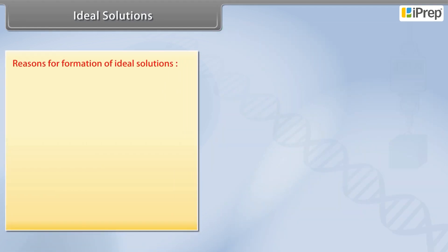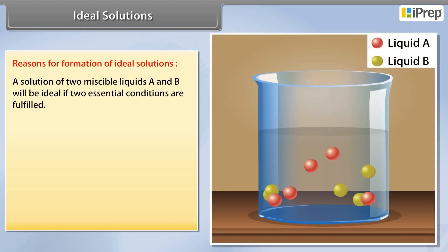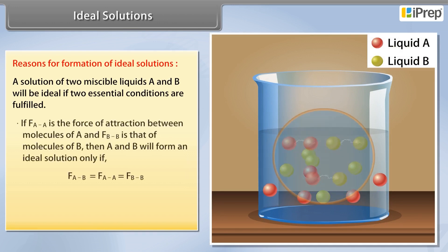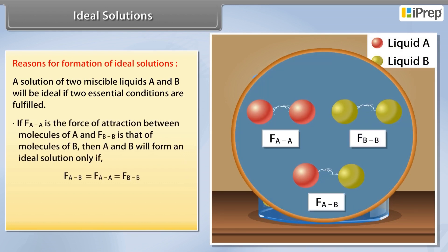Reasons for formation of ideal solutions: A solution of two miscible liquids A and B will be ideal if two essential conditions are fulfilled. If the force of attraction between molecules of A and B is equal to the force of attraction within molecules of A and force of attraction within molecules of B,